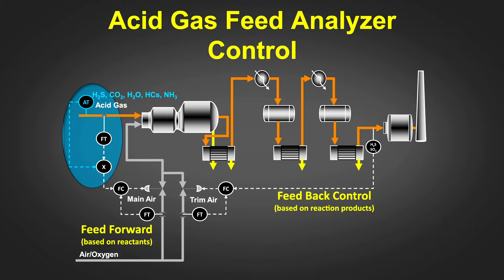Feedback trim air control, based on the reaction products of H2S and SO2 in the tail gas, is the primary control element and provides the most precision. However, it is limited by the 30-second process lag time, especially if the composition of the acid gas changes rapidly or the SRU is in turndown, i.e. low flow conditions. Feedback control is suitable under slow-moving equilibrium conditions, but not sufficient during hydrocarbon upsets in the acid gas when the process is fast-moving and the control requirements are dynamic. For this purpose, feed-forward control based on a full compositional analysis of the reactants is required.